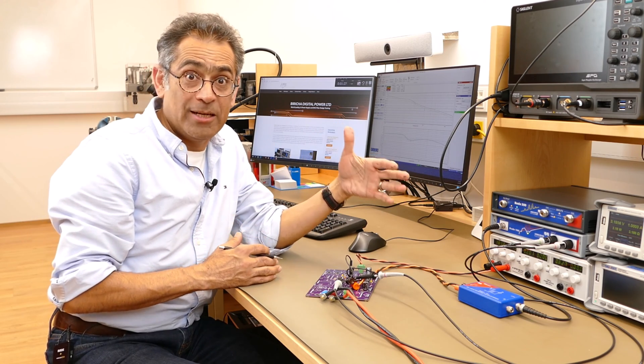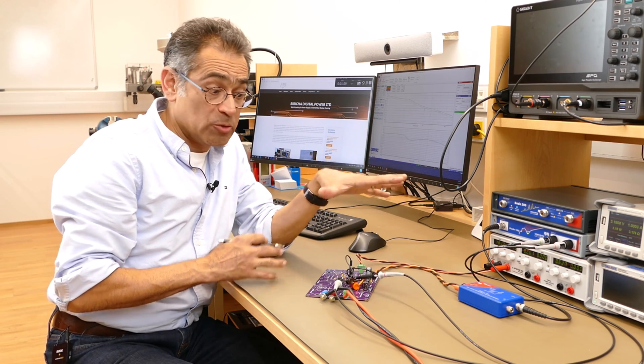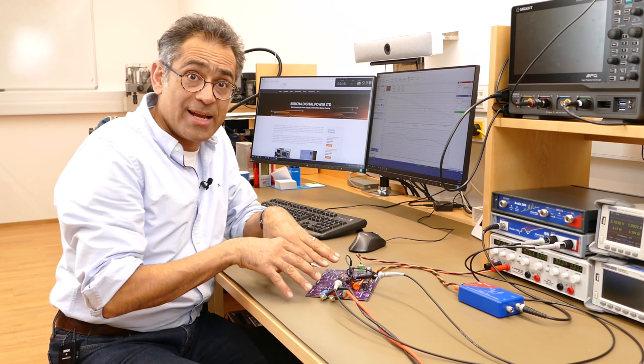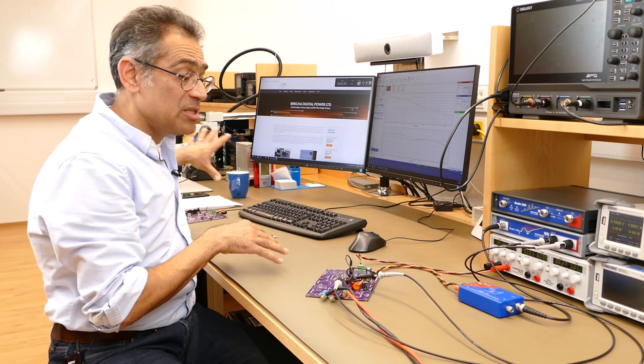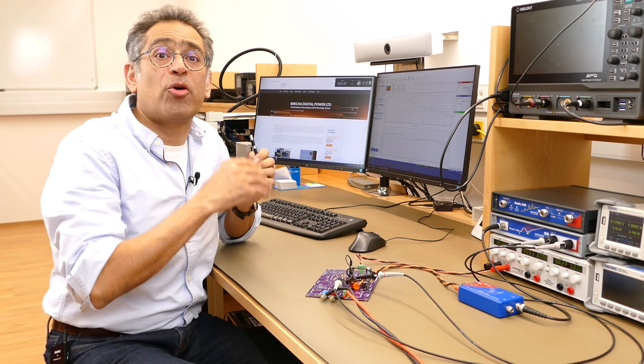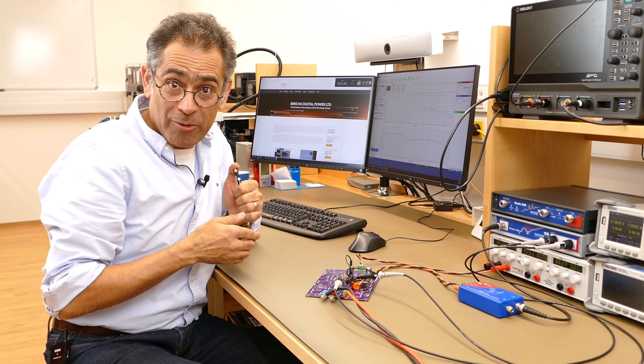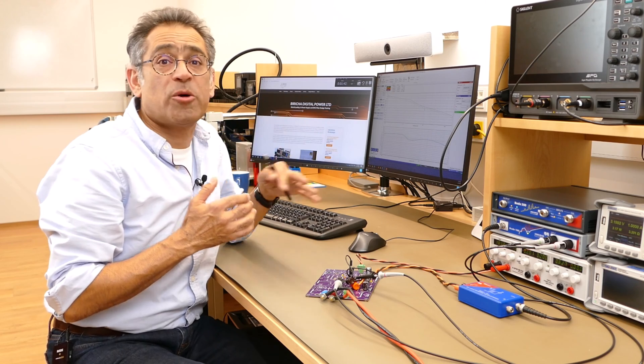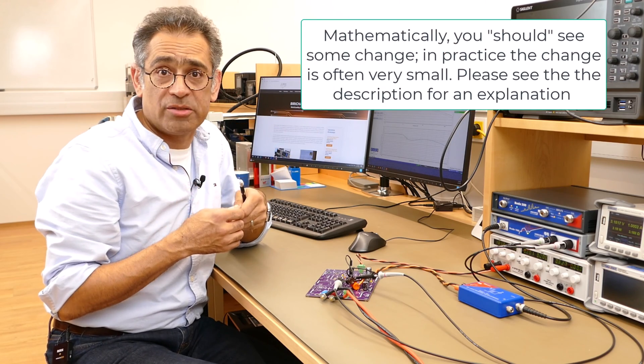We're going to show that in a little bit with the oscilloscope later. But what I'm going to do now is disconnect this voltage mode board and connect the current mode one. And then I'm going to do exactly the same thing in that I'm going to increase the input voltage and hopefully we will see that the loop response for a current mode controller is not going to change.